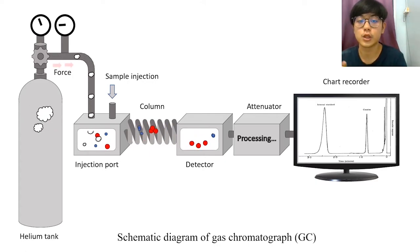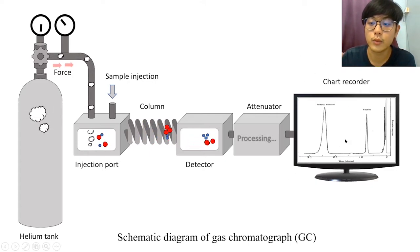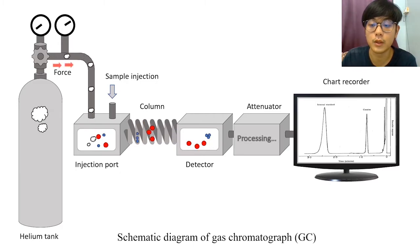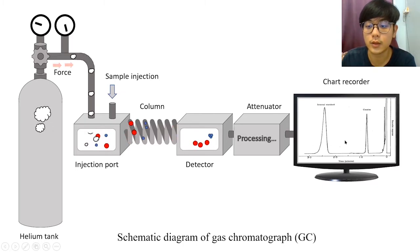And lastly, we have the charts. So how to read the charts? In the chart, we have y-axis and x-axis. Y-axis is the intensity which shows the quantity of the components. And time is basically which components reach first.